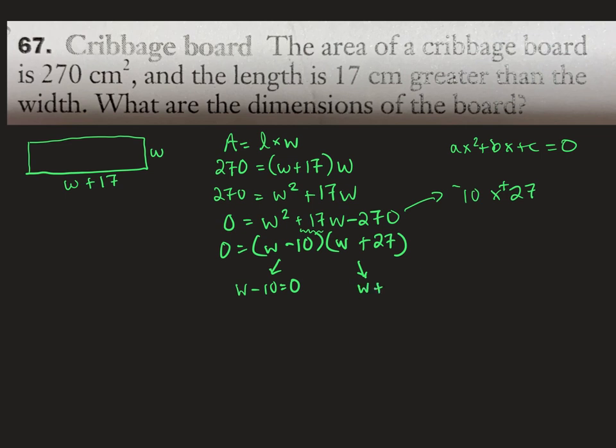So we branch it off into the two scenarios: either W minus 10 equals zero, or W plus 27 equals zero. Solve each of those little equations for W. Add 10 on that first one. The other one, subtract 27 from both sides. And we get two answers: W equals 10, W equals negative 27.